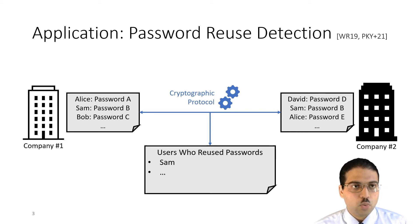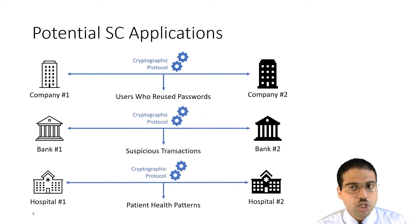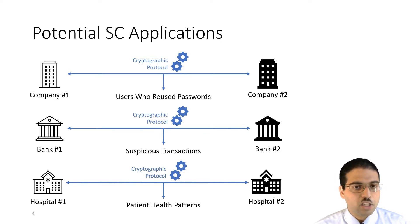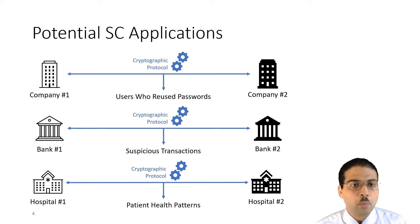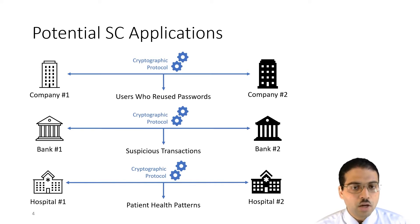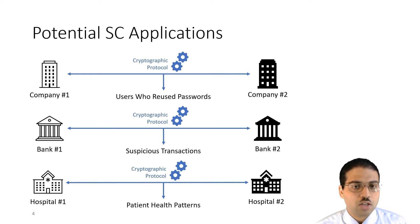This is just one example. Secure computation is useful whenever parties need to collaborate but can't directly share their data. For example, multiple competing banks may not want to share who their customers are or what their transactions are with other banks, but they might want to look for suspicious transactions happening across the banks. Similarly, multiple hospitals may not be able to share patient data directly due to legal reasons, but they might want to look for patient health patterns across hospitals for research purposes.